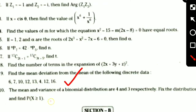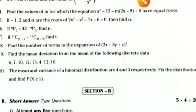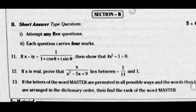The 10th question: the mean and variance of the binomial distribution are 4 and 3 respectively. Fix the distribution and find the value of P(X ≥ 1). These are the 2-mark questions. Now let us see the 4-mark questions. Section B: short answer questions — answer any 5 questions, each one carries 4 marks.